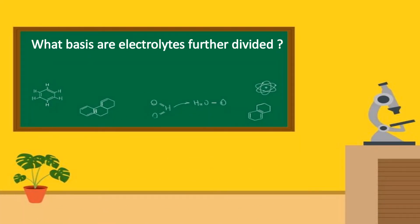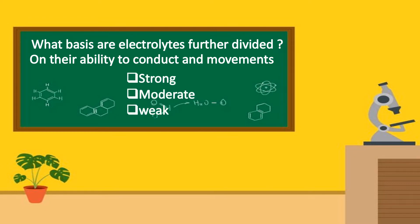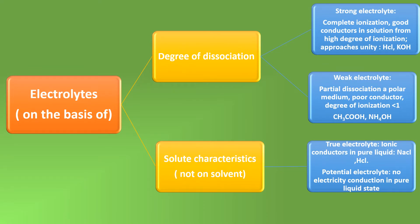On the basis of their ability to conduct and the nature of the electrolytic substance, electrolytes are classified as strong, moderate, and weak electrolytes. On the basis of degree of dissociation and solute characteristics, they are further classified as strong, weak, true, and potential electrolytes.